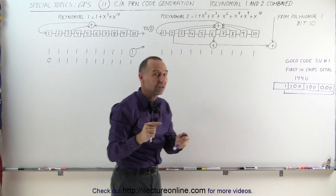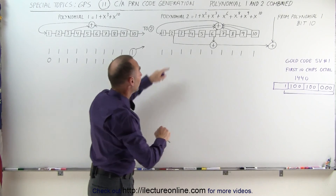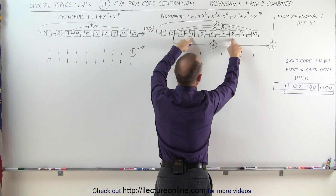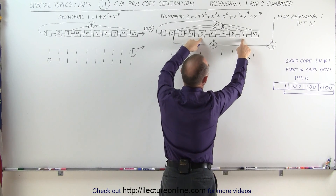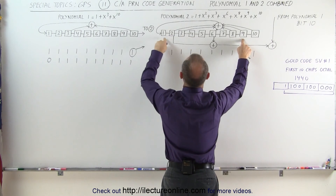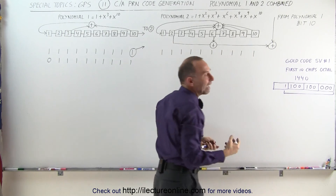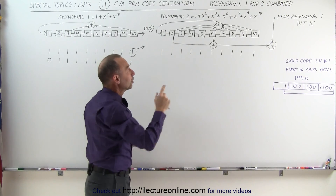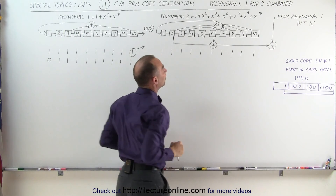Remember that bits 2 and 6 are summed for Space Vehicle 1, 3 and 7 for Space Vehicle 2, 4 and 8 for Space Vehicle 3, 5 and 9 for Space Vehicle 4, and 1 and 9 for Space Vehicle 5, and so forth. Every space vehicle gets their code produced by summing up 2 of these bits.